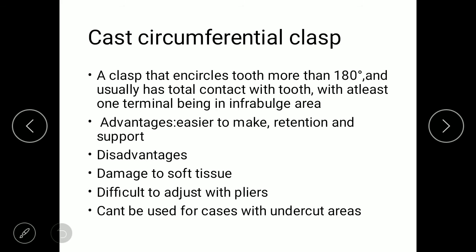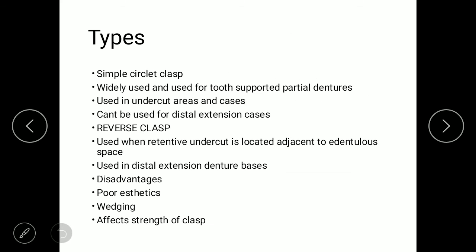In cast circumferential clasp there are 11 types. The first is the simple circular clasp, used for tooth-supported partial dentures in undercut areas; it cannot be used in distal extension cases. The second is the reverse circular clasp, used in retentive undercuts located adjacent to the edentulous space and used in distal extension denture bases.